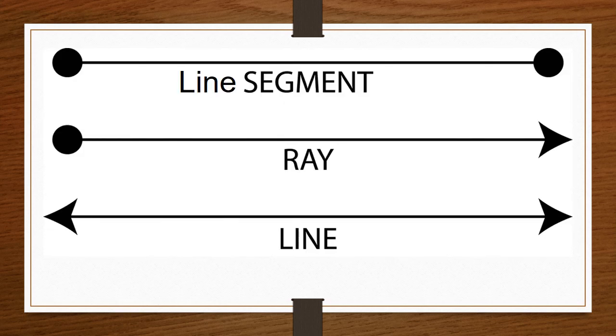Now students, you can able to see the diagram of line segment, ray and line in front of you. You can see that in line segment, you have two end points and in ray, you have only one end point and in the line, you have no end points.